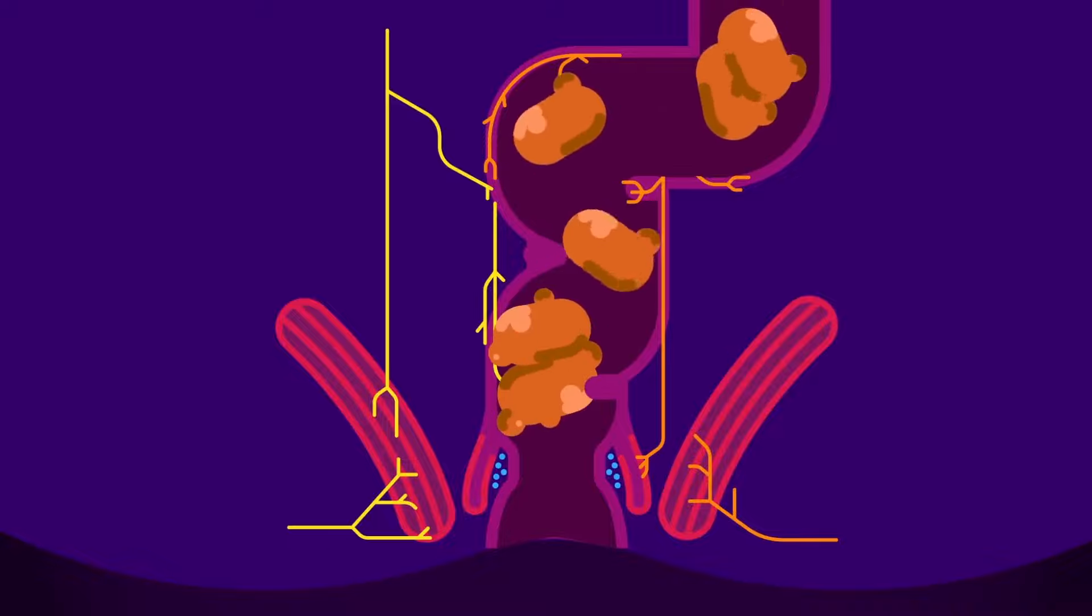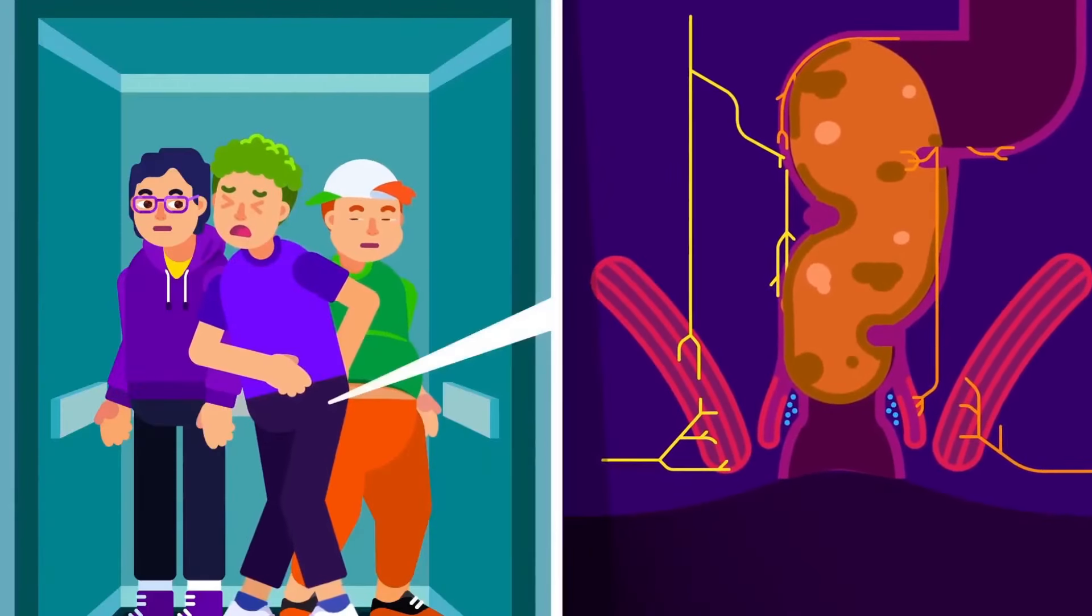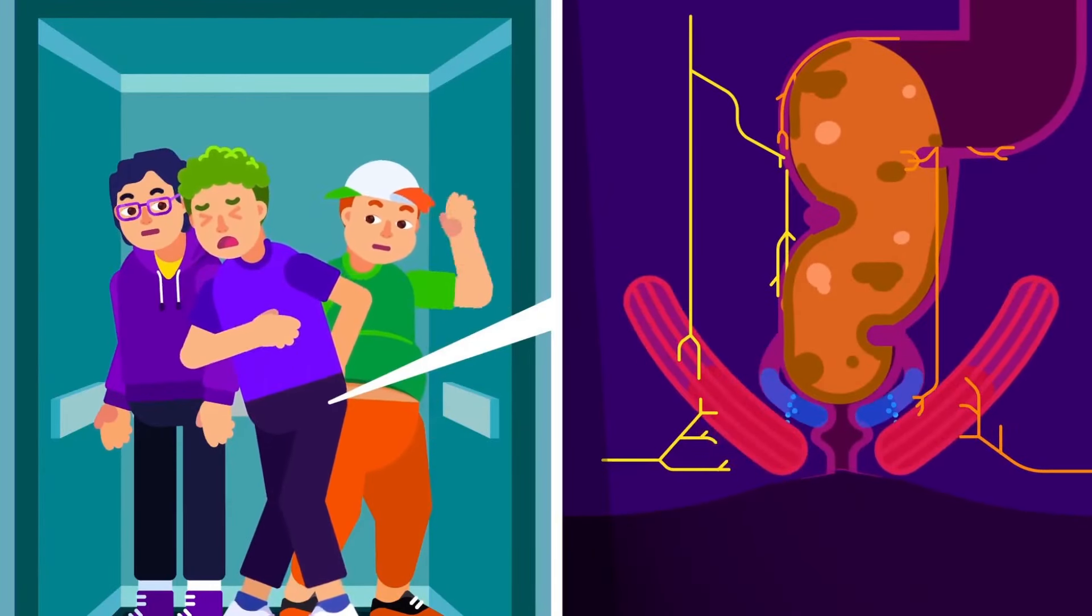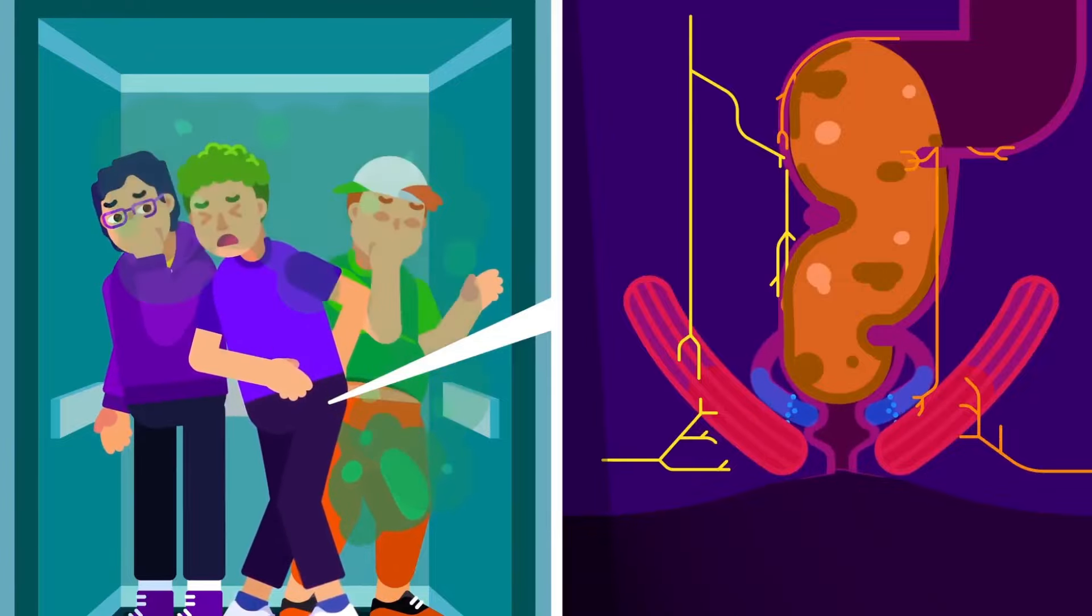As it receives more stool, the rectal wall expands and activates its stretch receptor, which in turn contracts the external sphincter to prevent any unwanted leaks or droppings. It also relaxes the internal anal sphincter and sends a message to the brain to urge you to defecate.